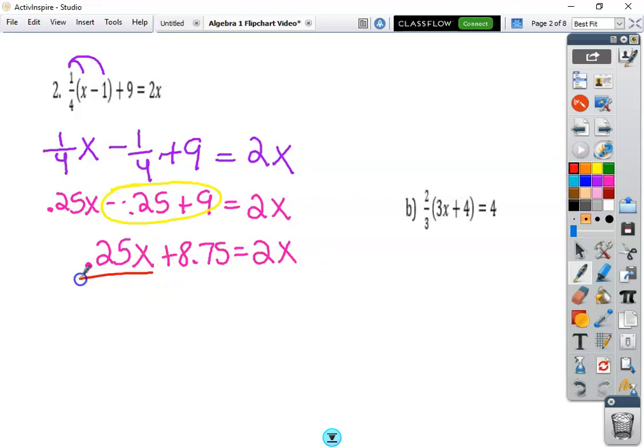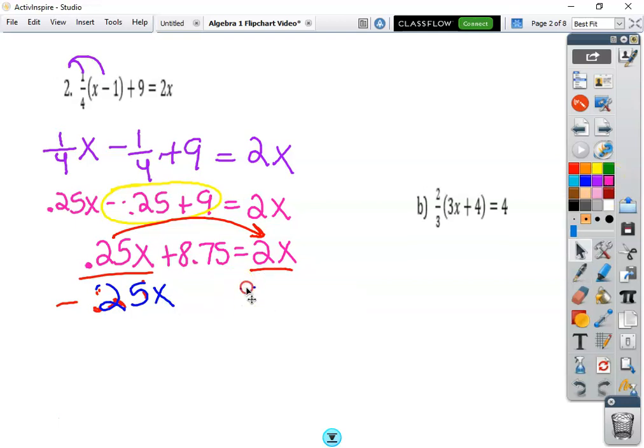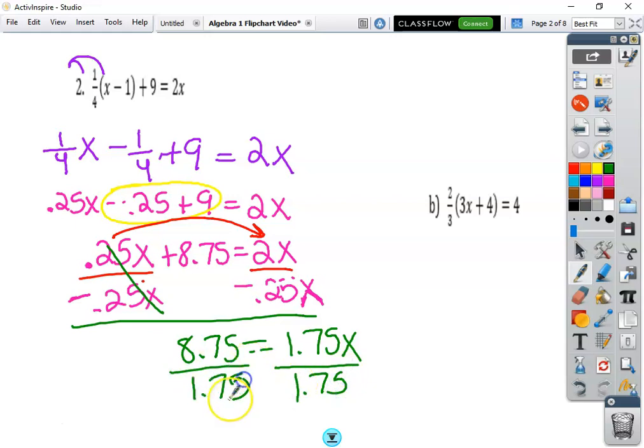Now I want to put these x's together. I got to move one of them. I'm going to move this 0.25 x over to the other side by subtracting it. We want to combine like terms. I'm going to subtract 0.25 x to both sides and what I have left over is 8.75 which equals two minus 0.25 would be 1.75 x. Now our last step is getting this x isolated. Dividing 1.75 to both sides and I would get x equals five.